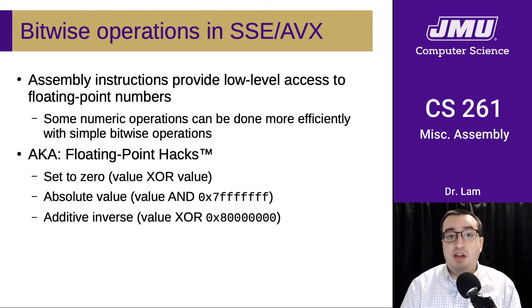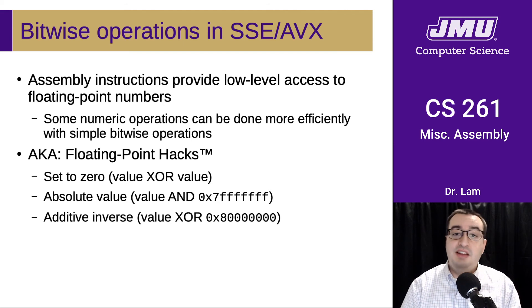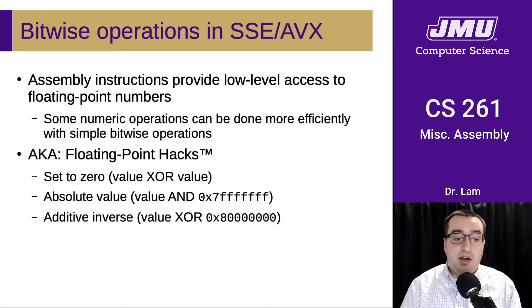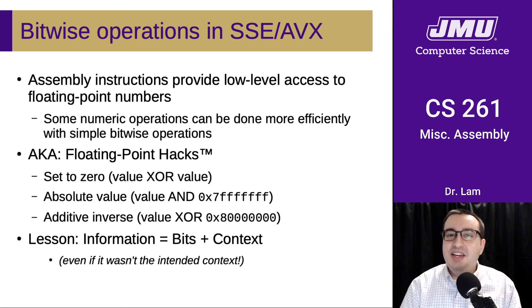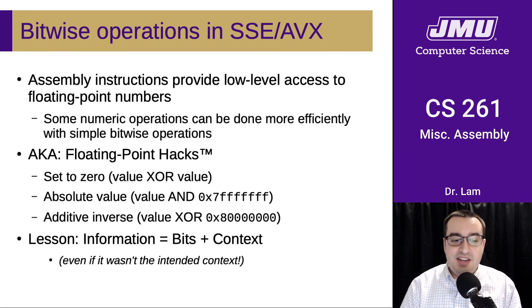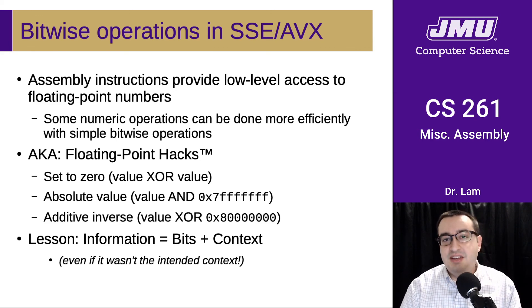Because of the sign bit, you can take the absolute value simply by ANDing with a bit mask that turns that bit off — if positive, it stays positive; if negative, it becomes the same magnitude but positive. You can also take the additive inverse by XORing with a 1 in the sign bit position, which just flips the sign. These floating point hacks illustrate the core concept we've reinforced all semester: information equals bits plus context — even if it's not the intended context. We can manipulate our understanding of the context of our data to do novel and interesting things with it.